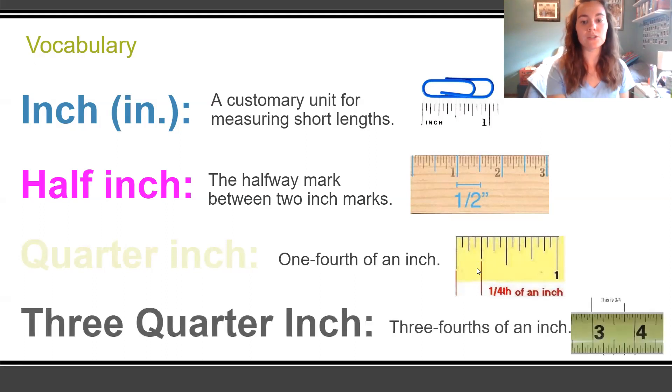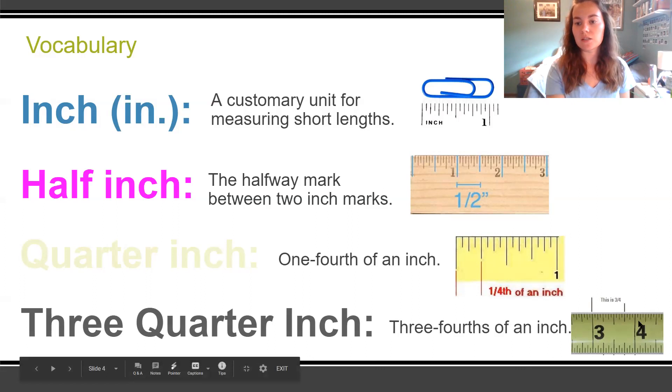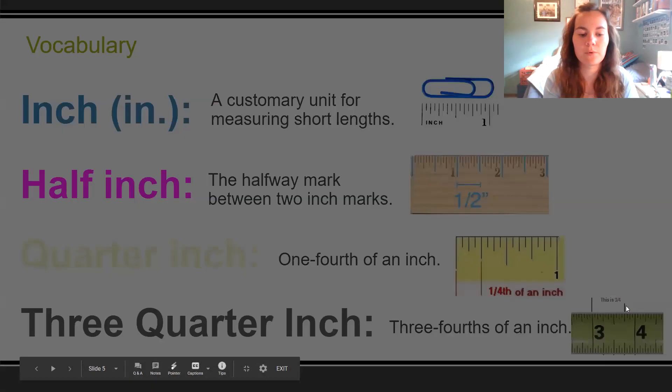Three quarter inch is three fourths of an inch. So in this one, we have our three and our four inches here. And it's a smaller scale. So it's harder to see. But this longer line is our halfway point. And this line here is our three fourths point.